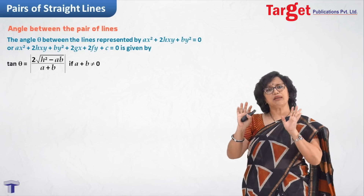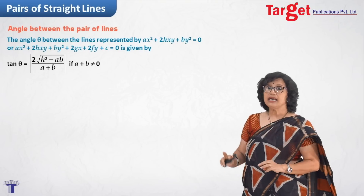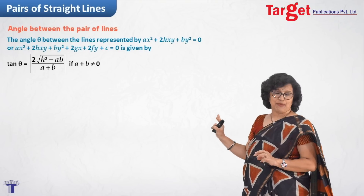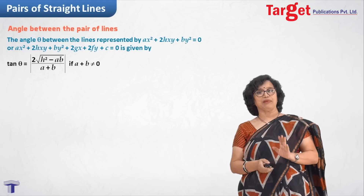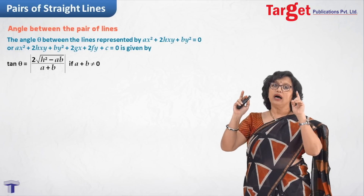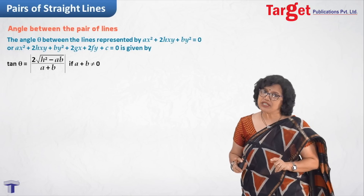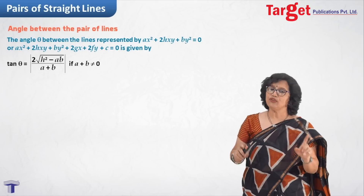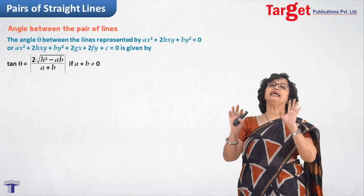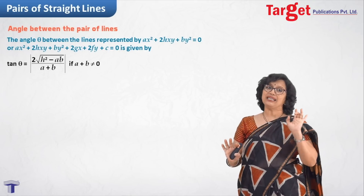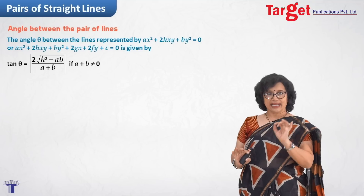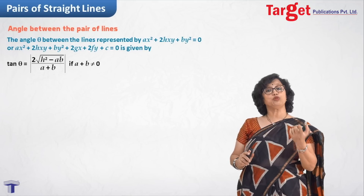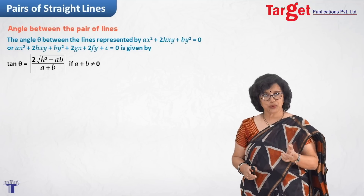tan θ = |2√(h²-ab)| / (a+b). The absolute value is written only to indicate that theta is the acute angle. If you do not use the absolute value and you get a negative value for tan θ, that means the theta you found is the obtuse angle between the two lines.